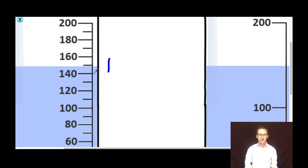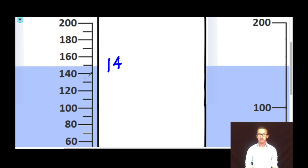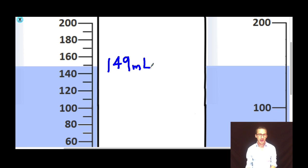I also know that my water level is definitely more than 140 but less than 150, so with certainty I can say 140 something. But now we get to the point where I have to estimate. I'm not given individual graduations for the one milliliter volume, but I definitely know it's more than 140 but less than 150. So I'm going to say 149 milliliters, even though someone else might read that exact same beaker and say 148. There is some estimation in that final digit.